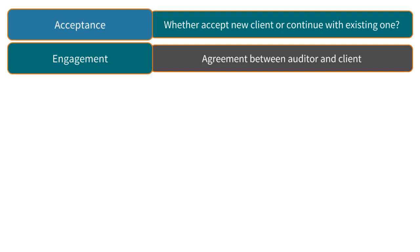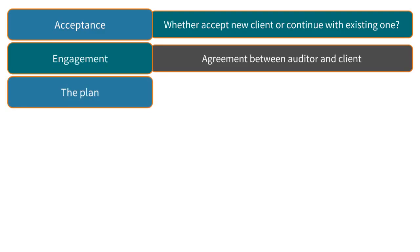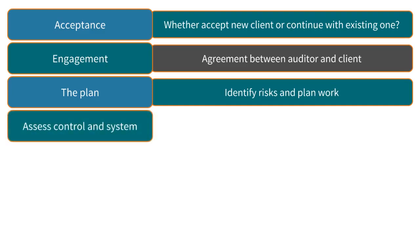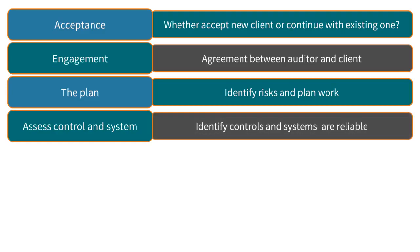Step 3: The Plan. Once the agreement is in place, the auditor must carefully plan the audit and identify any risks and other issues that need to be managed during the audit. Step 4: Assess Controls and Systems. The auditor must then review the systems and control procedures at the client. The aim is to identify whether they have strong or poor controls, which helps decide how reliable the financial statements may be and the amount of work the auditor should carry out on transactions and balances.